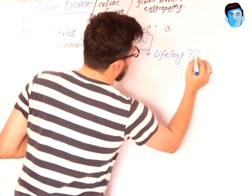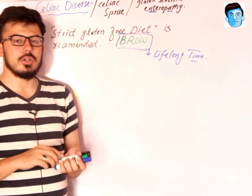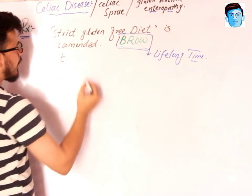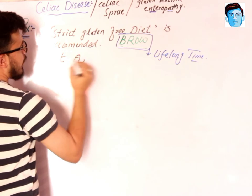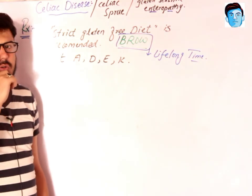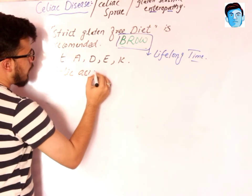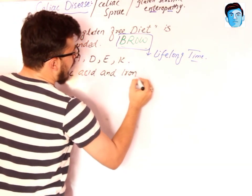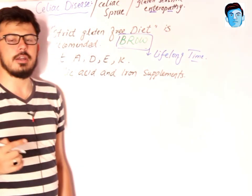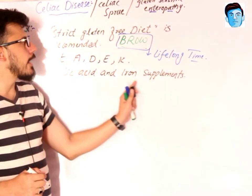Additionally, you can give fat-soluble vitamins such as vitamin A, D, E, and K. Folic acid and iron supplements can also be given in order to prevent and monitor electrolyte imbalance in these patients.